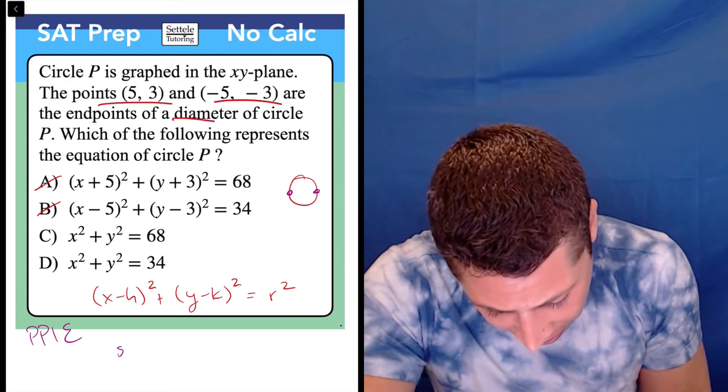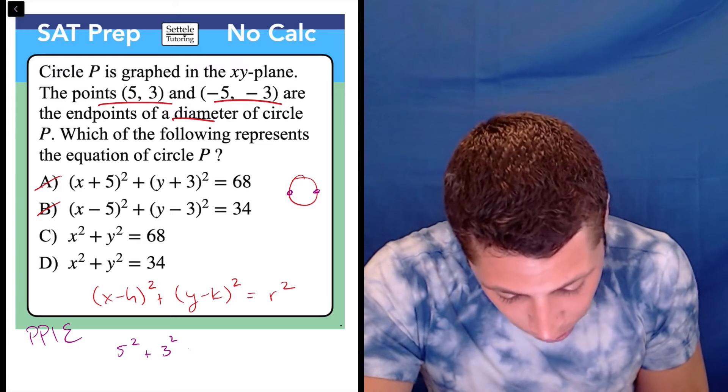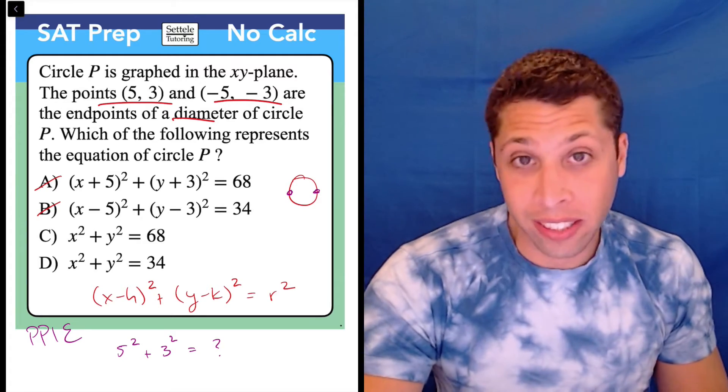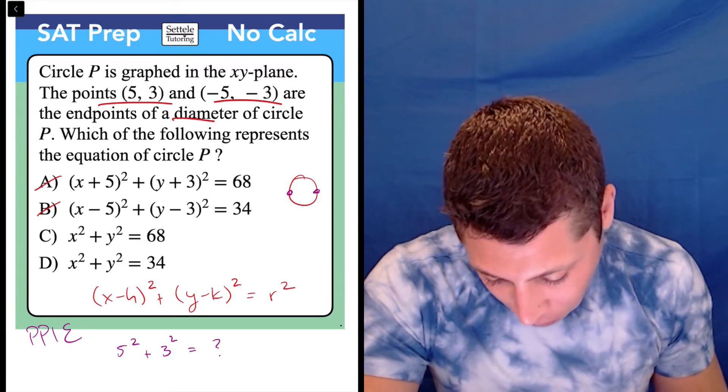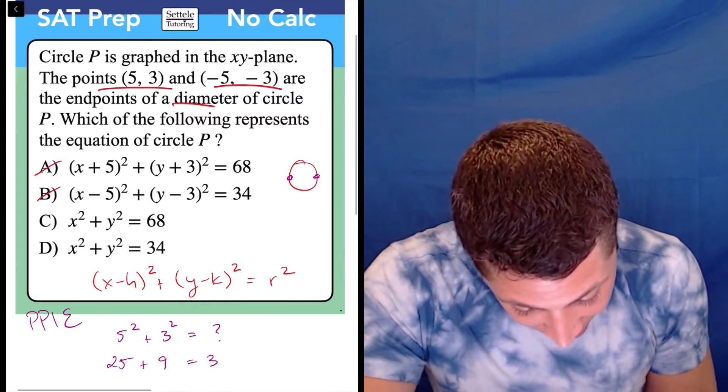Luckily for C and D, the first half is the same, right? 5 is the x, so 5² + 3² is what? Well, if it's 68, then choice C is the answer. If it's 34, then choice D is the answer. And so 25 + 9 = 34.